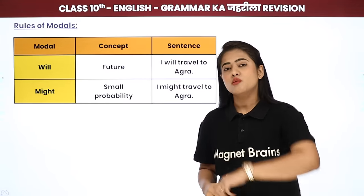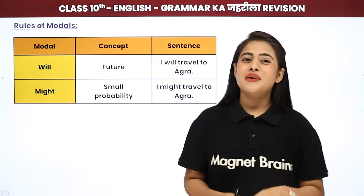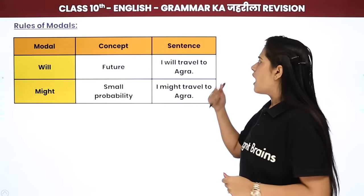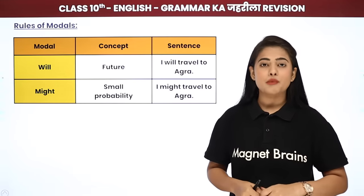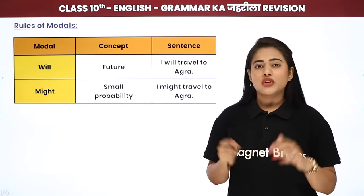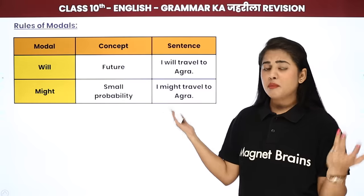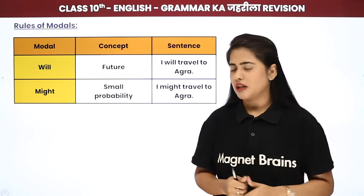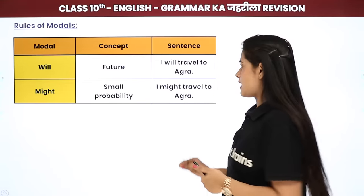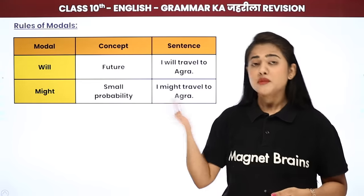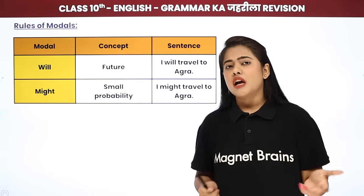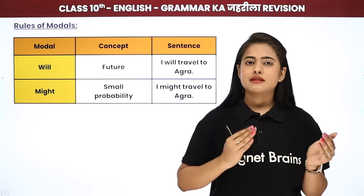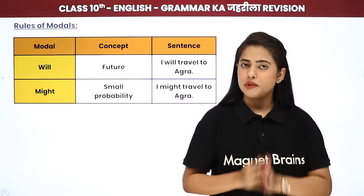Next aata hai WILL. WILL se toh mulaqaat hum tenses mein bhi kar chuke hain — WILL hamesha future ki baat karta hai. For example: 'I will travel to Agra,' 'I will study for my exams.' Next aata hai MIGHT. Abhi MAY tha 'shayad' — around 50-60% chance. Jab chances bohot hi kam hoon, tab MIGHT ka istemal karte hain — very very small probability. 'I might travel to Agra' means mere sirf 10 to 20 percent chances hain. This is the basic difference between the probability degree of MAY and MIGHT.